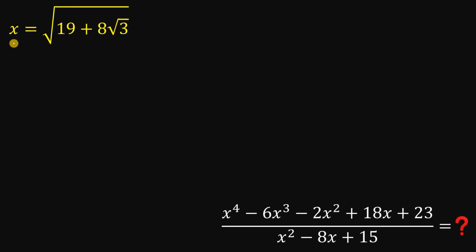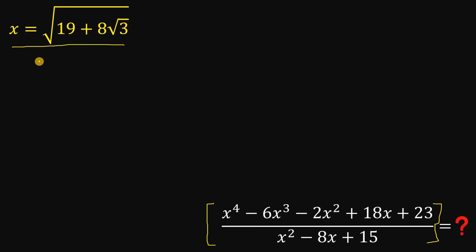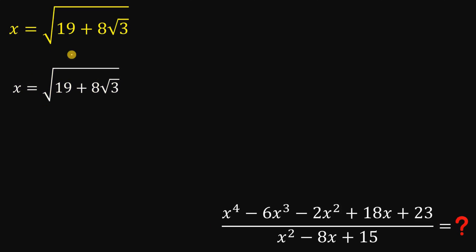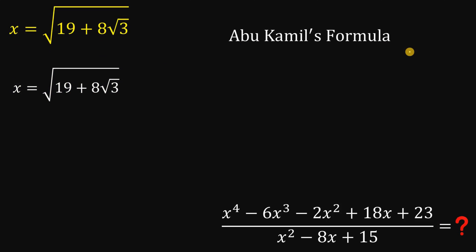Alright, so given this equation — the value of x — the goal is to evaluate this expression, and we need a value for this expression. This is our solution. First, let's get the equation x equals square root of 19 plus 8 times square root of 3. To simplify this, we will use one technique, and that technique is the Abou Camille's formula.